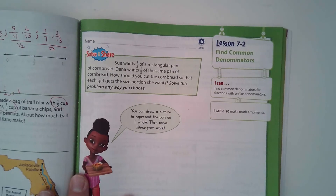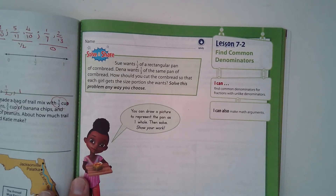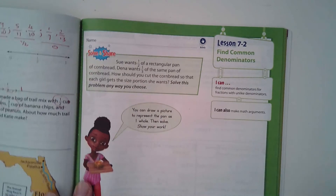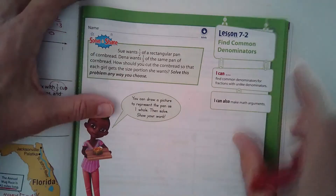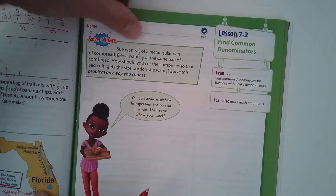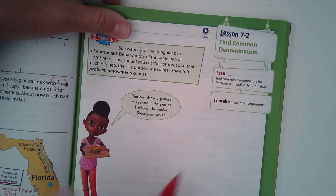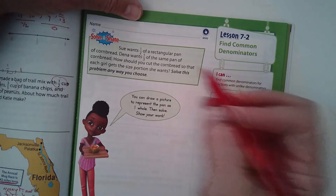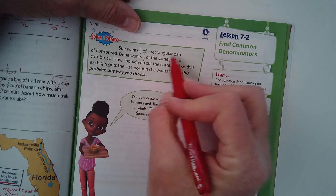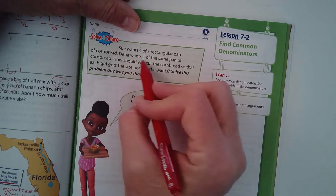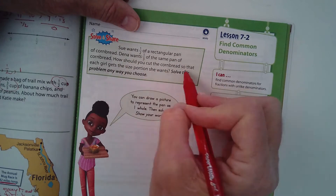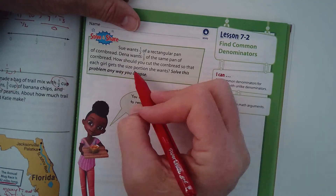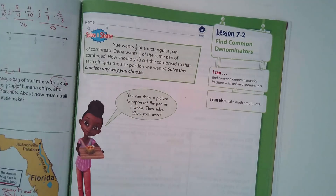Okay, so 7-2 finding common denominators. I've already given you guys a short lesson on this and I think most of you understand what's going on here. Here's a word problem: Sue wants half of a rectangle pan of cornbread and Dina wants a third of the same pan of cornbread. How should you cut the cornbread so that each girl gets the size portion she wants?